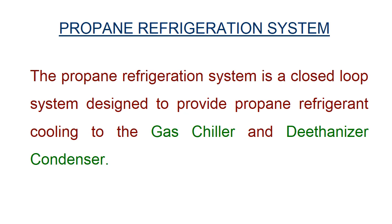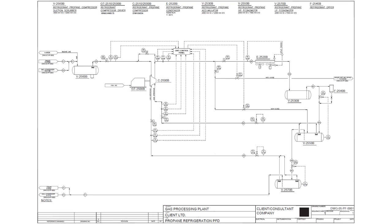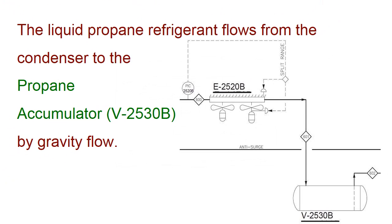The propane refrigeration system is a closed loop system designed to provide propane refrigeration to the gas chiller and deethanizer condenser. The process flow diagram for this plant is shown on the next slide, followed by every process stage with the corresponding equipment and their functions during the propane refrigeration cycle. The liquid propane refrigeration flows from the liquid answer to the propane accumulator, vessel 2530B, by gravity flow.